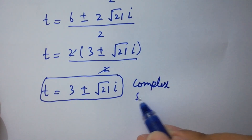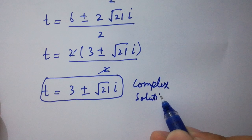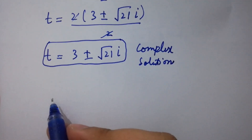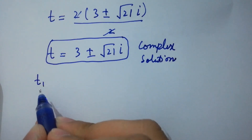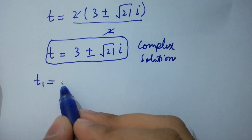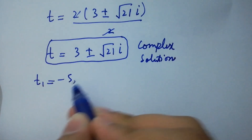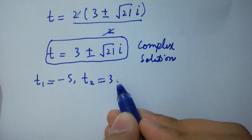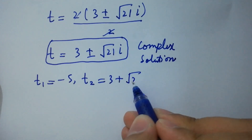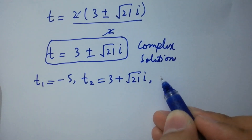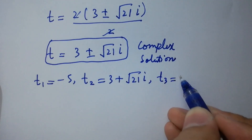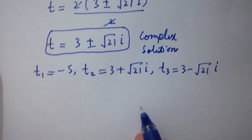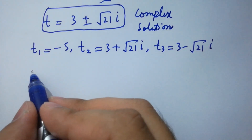So we have three values of t: t1 equals minus 5, t2 equals 3 plus square root of 21 times i, and t3 equals 3 minus square root of 21 times i.